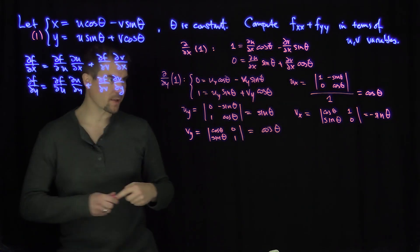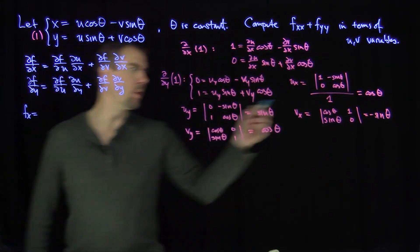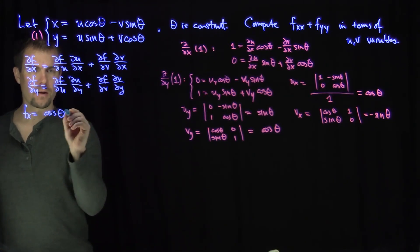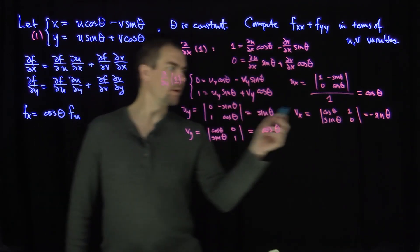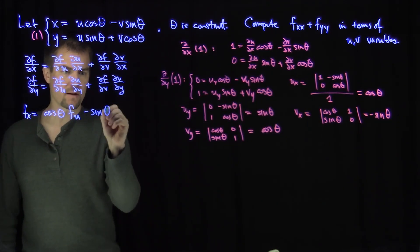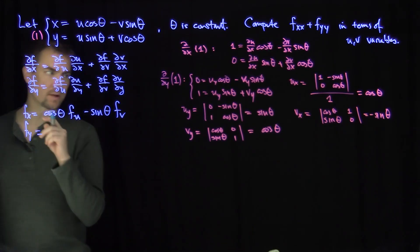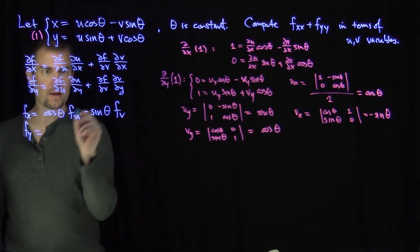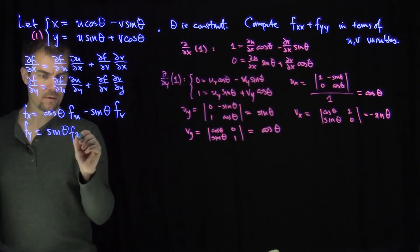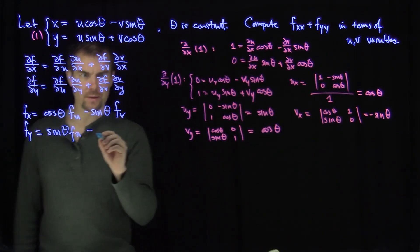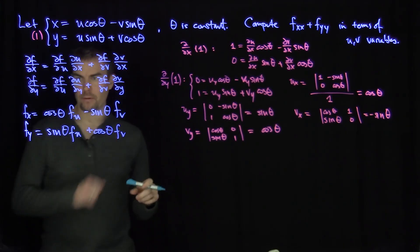Updating the chain rules: fx = cosθ · fu - sinθ · fv, and fy = sinθ · fu + cosθ · fv. Those are the first derivatives expressed in the u and v variables.